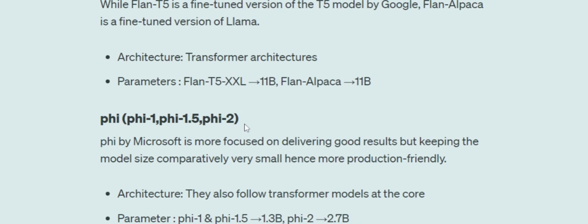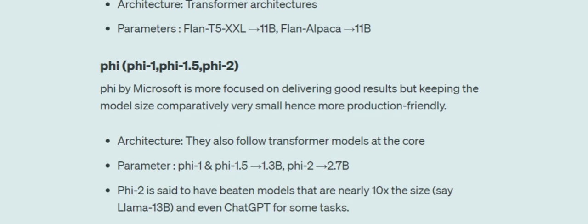The last model family we're talking about is Phi — Phi-1, Phi-1.5, and Phi-2, offered by Microsoft. Recently, Phi-2, which has nearly 2.7 billion parameters, outperformed LLaMA 13 billion and even models with 20 or 30 billion parameters. So a model with roughly one-twentieth of the parameters is able to outperform these larger models.